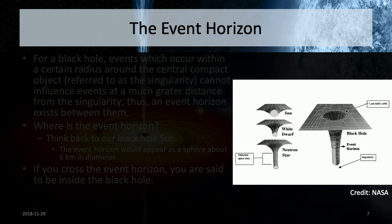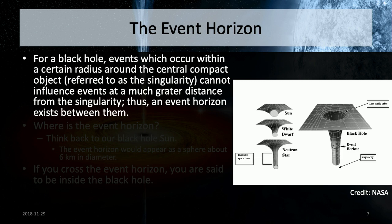An event horizon is where this event here cannot impact another event somewhere else. In a black hole, if you are close enough to a compact object — typically referred to as a singularity — there is a point where light cannot travel from that event to an area further away from the black hole. Thus, between those two points, there is an event horizon.